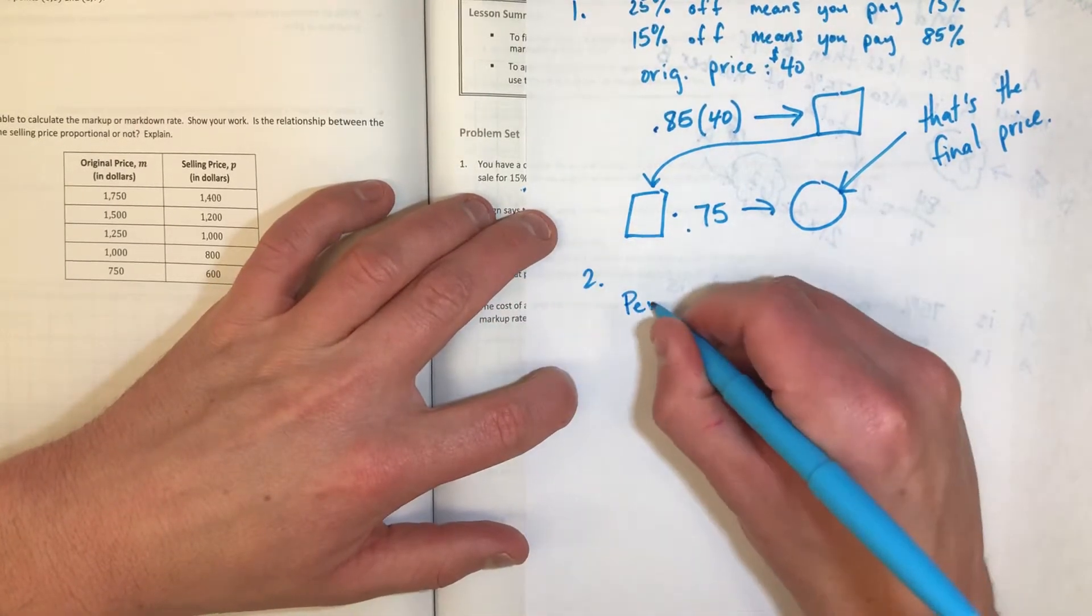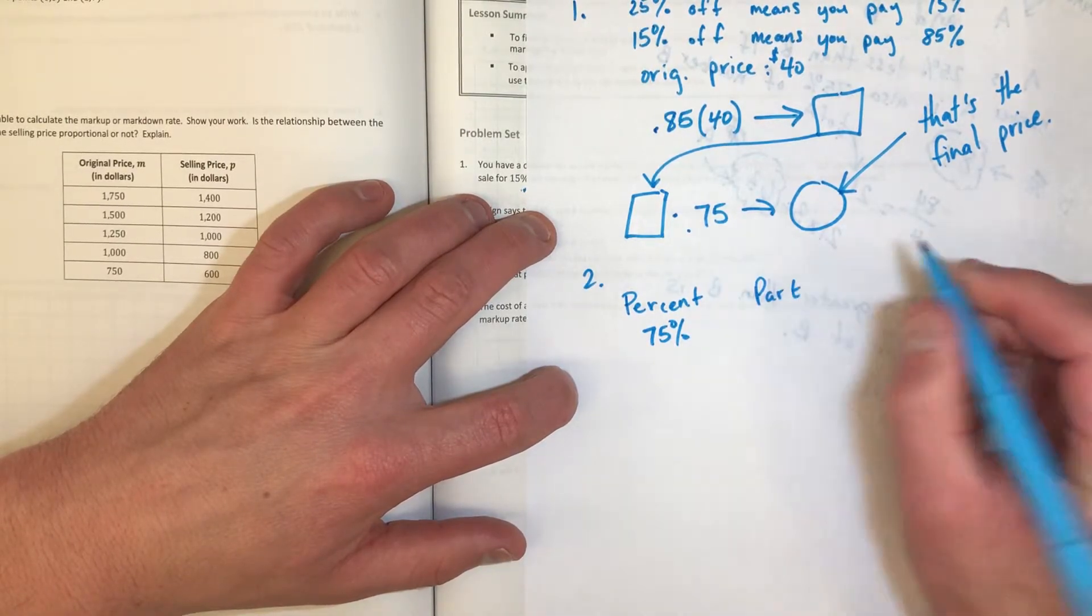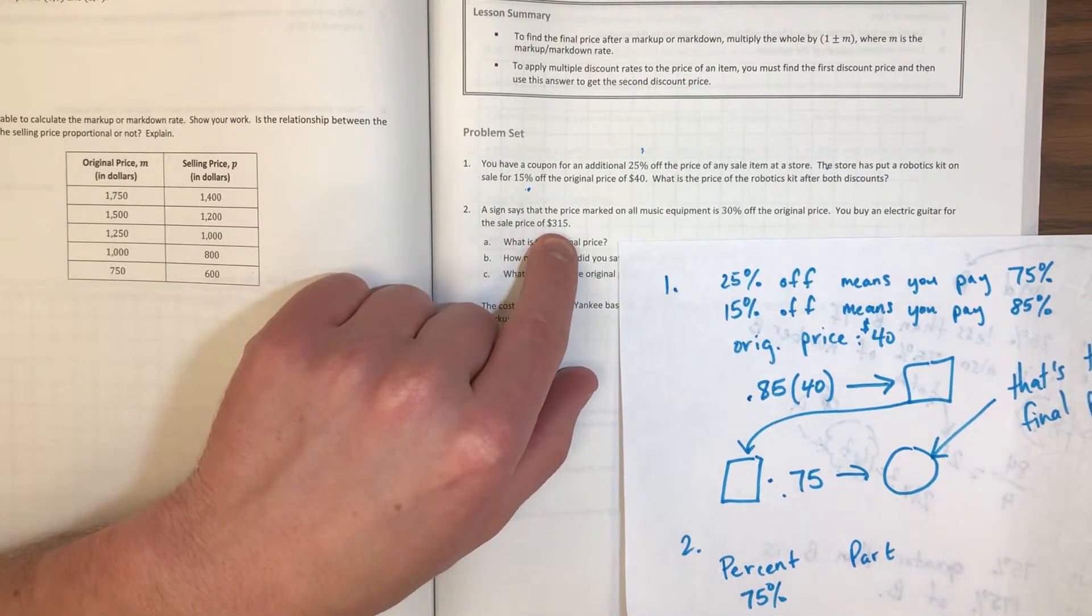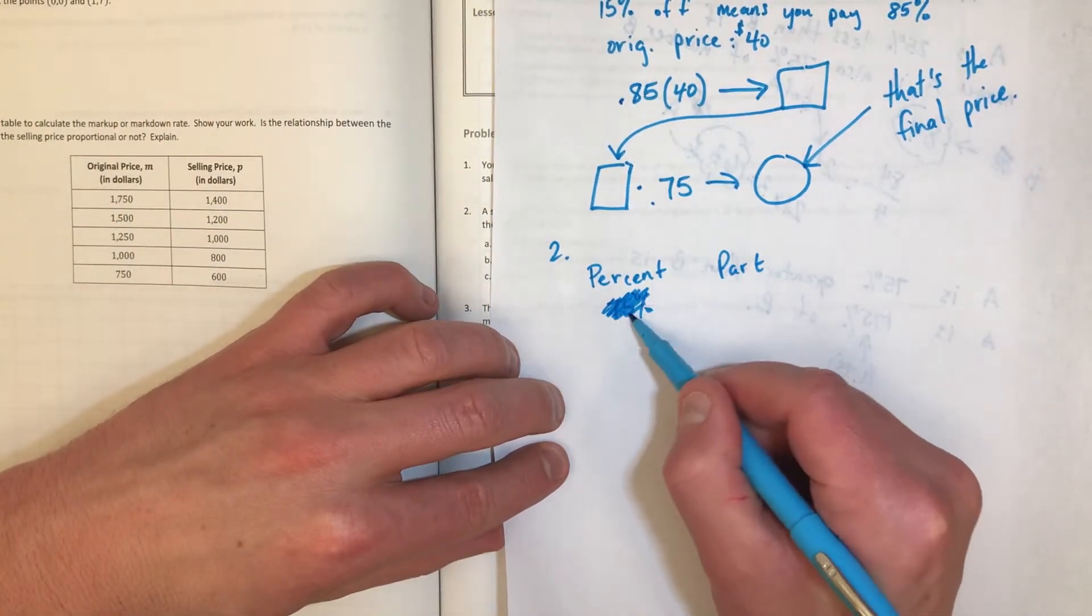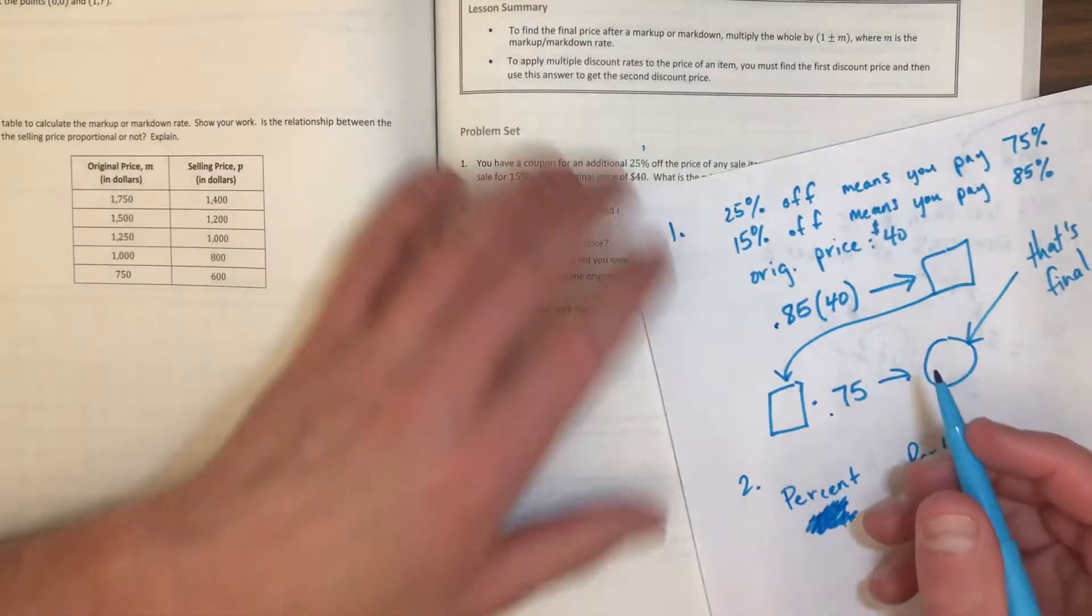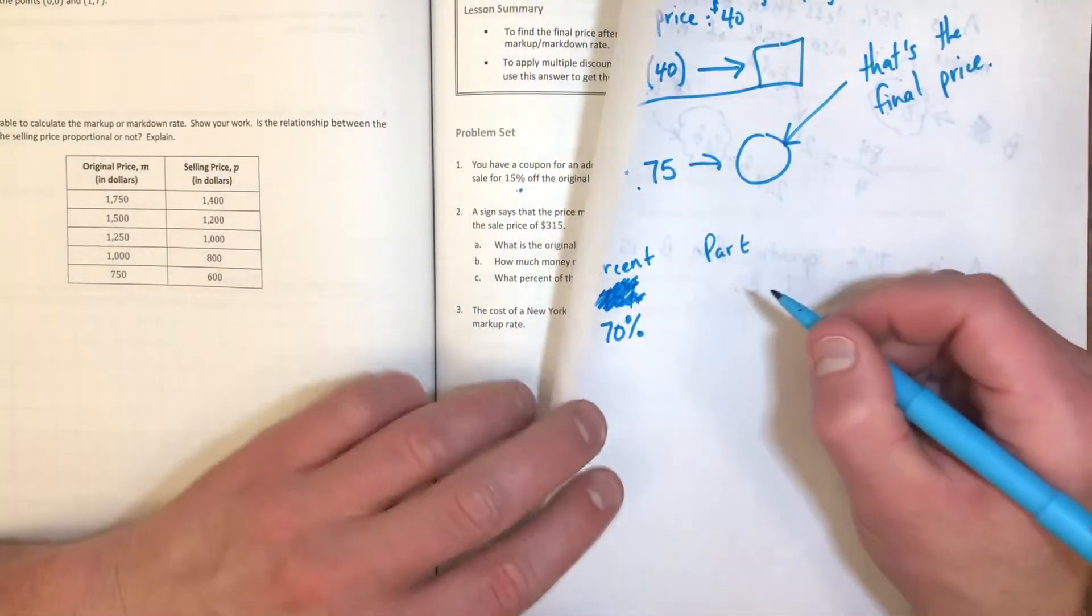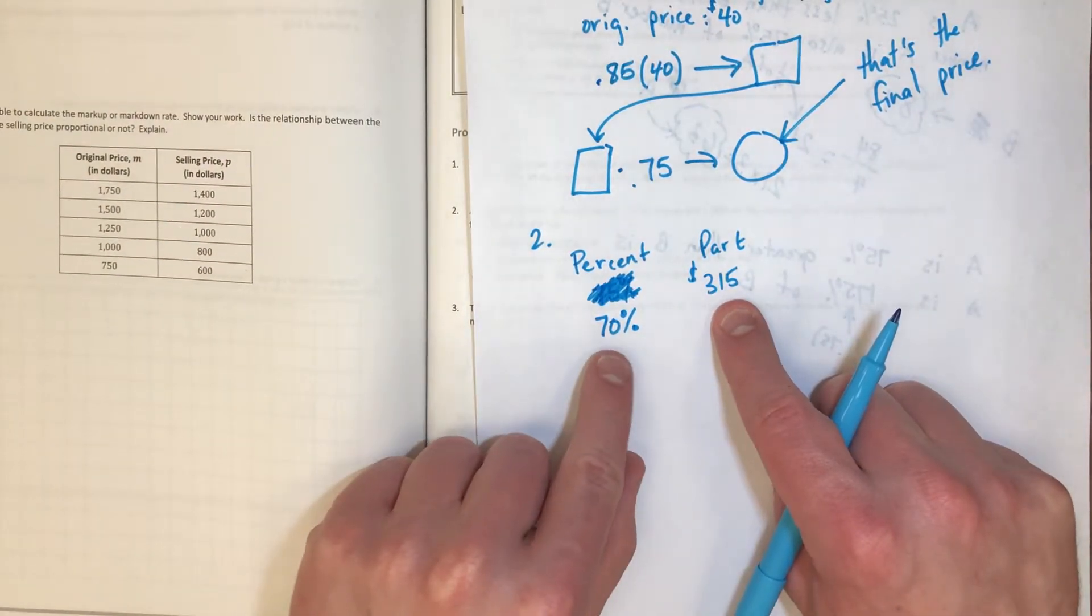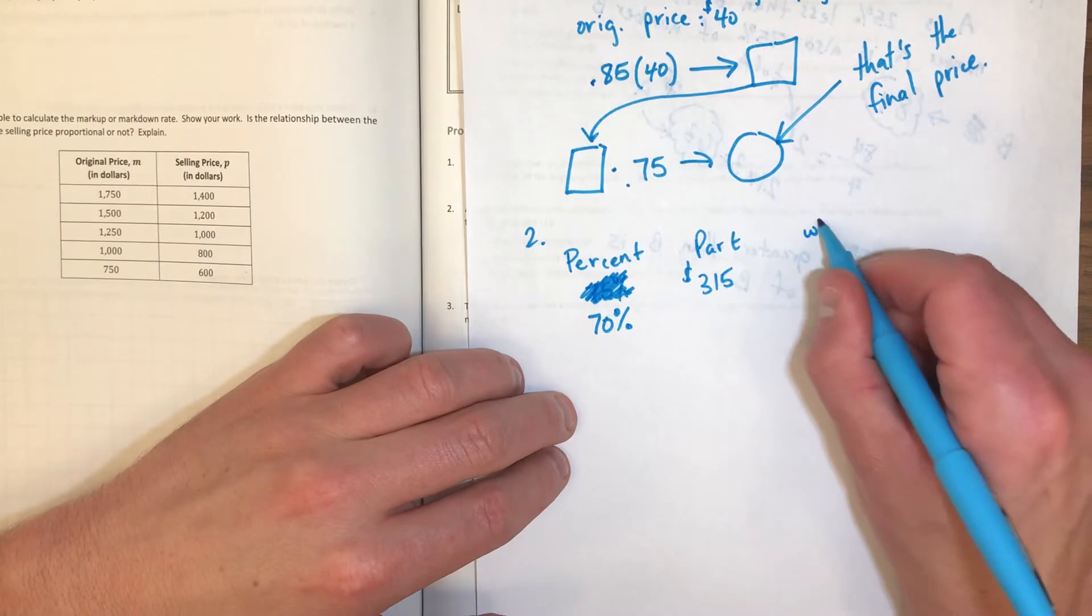You should think of it like this - like the questions we practiced a bunch. You have a percent. So I'm on number two now. You have a percent - you were given it's 75%. Wait, no. If you're just blindly copying me, you have wrong information right now. I hope you're paying attention. It says a sign says that the price marked on all equipment is 30% off, and so what I actually have is a percent that is 70%. I'm thinking about what does my part - that is the sale price of $315 - represent? This part represents 70% of the whole original price because they took 30% off.